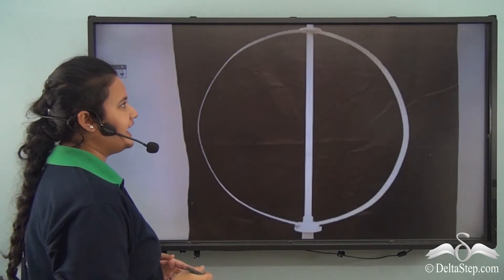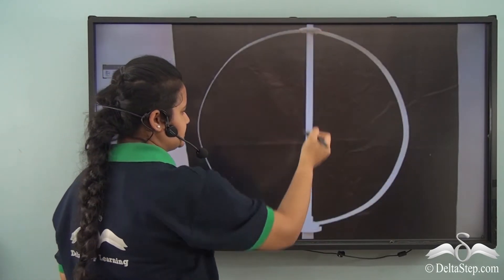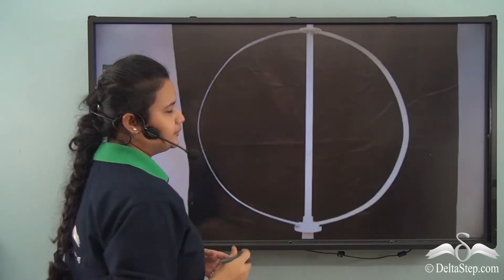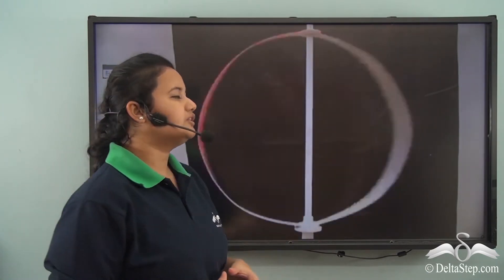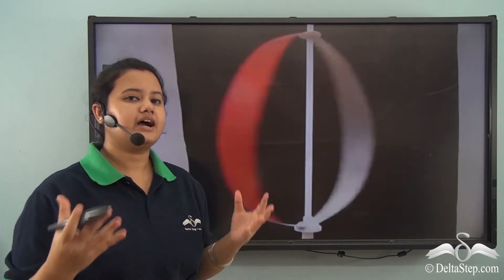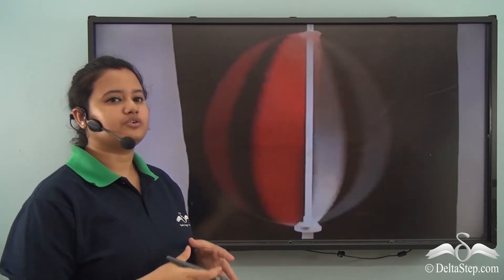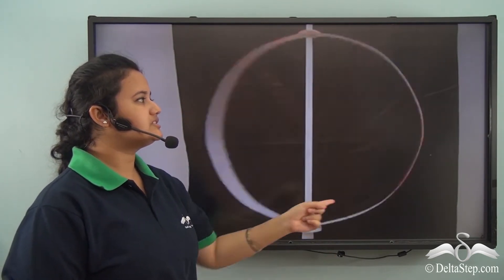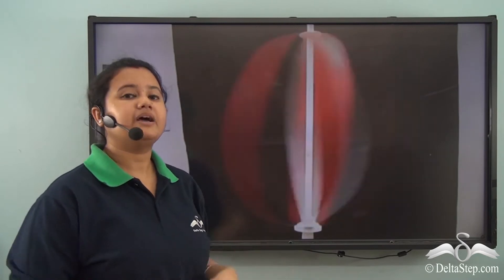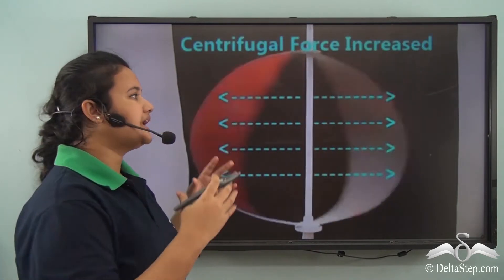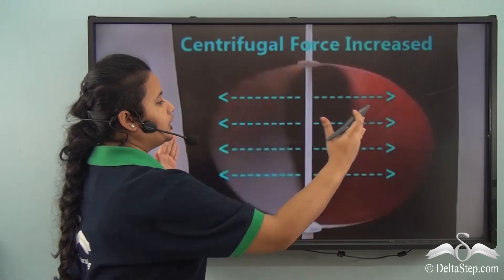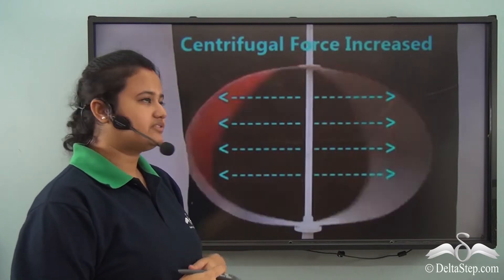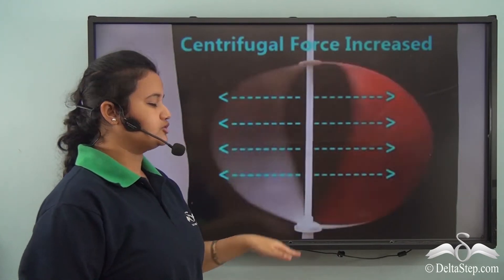Here we have a hand-driven rotator and a circular strap attached to it. Now let's spin the rotator at a high speed. Once you spin the rotator, you will find that the shape of the circular strap changes — it becomes expanded or bulged in the middle part, while it becomes flattened from both the top and bottom.